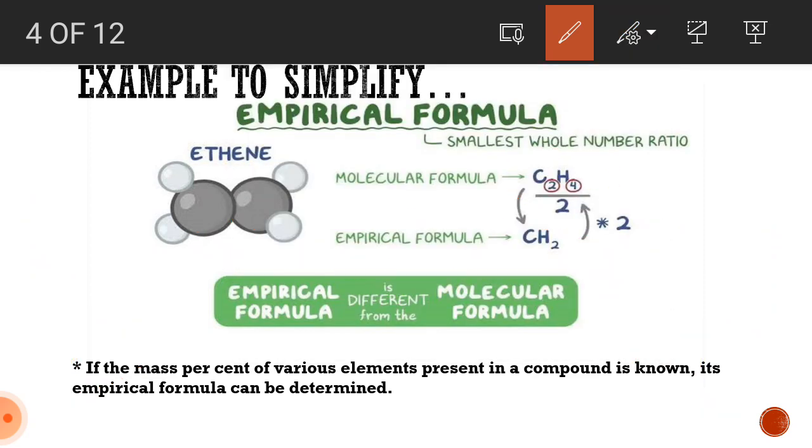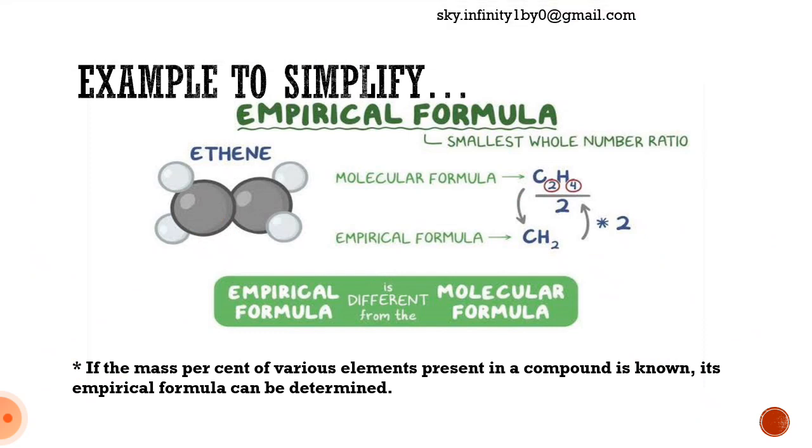And it needs to be kept in mind that if mass percent of various elements present in a compound is known, then its empirical formula can be determined. So, if you know the mass percent of any element, then you can easily find the empirical formula.